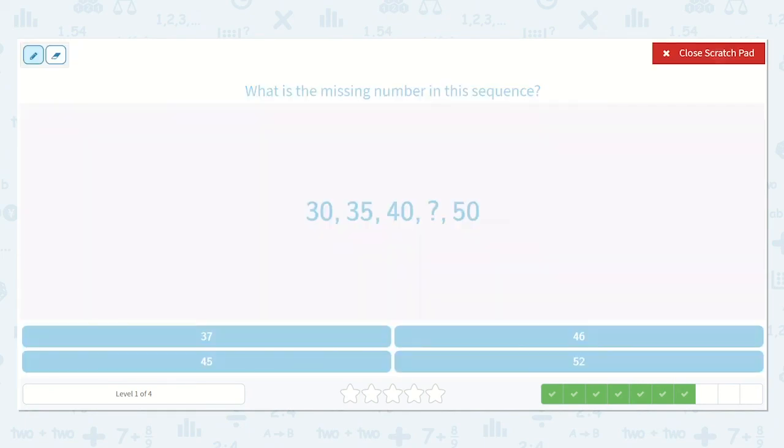Now we have 30, 35, 40, 45. Yes, 50. Because I can see that it's the 5 that's missing right here. 30, 35, 40, 45, 50.